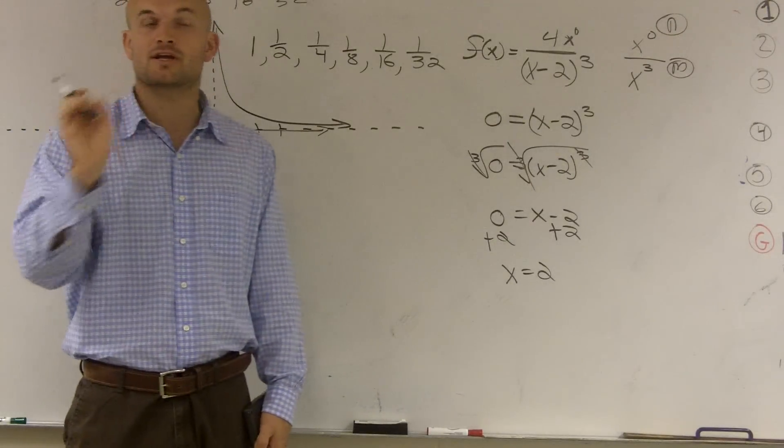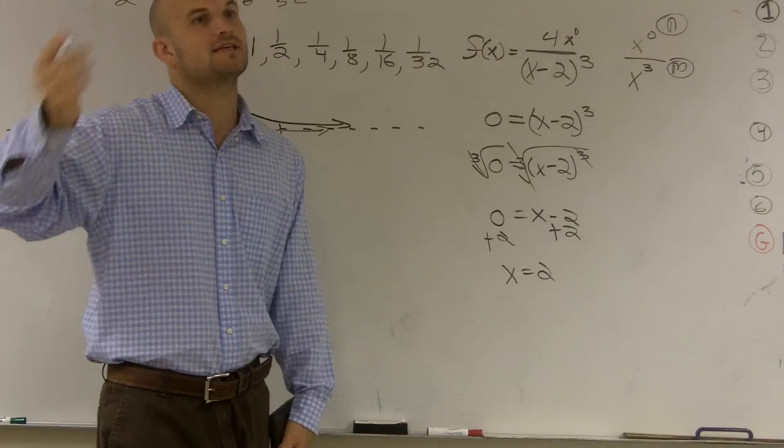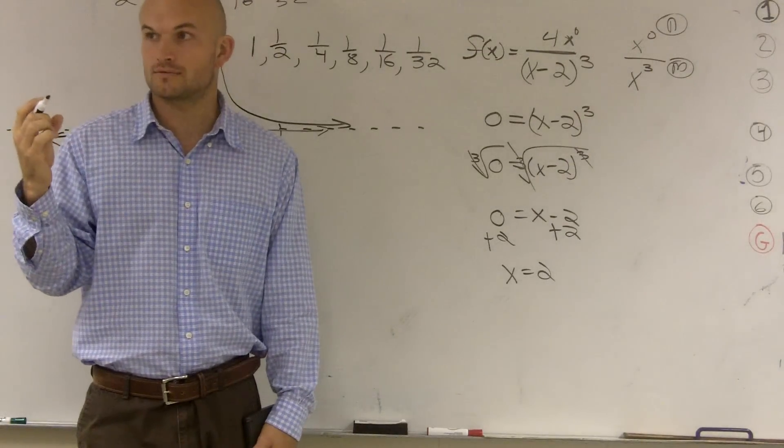You're never going to actually get to zero. You're going to get very, very, very close, but if you think about it, there's always something you can keep on cutting in half, so you're never actually going to get to zero. Does that make sense?